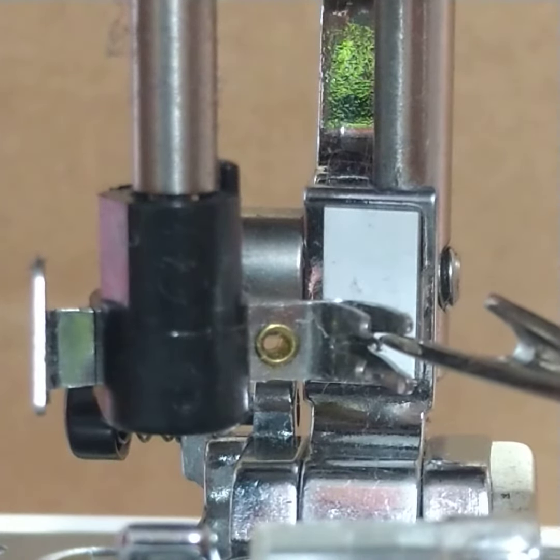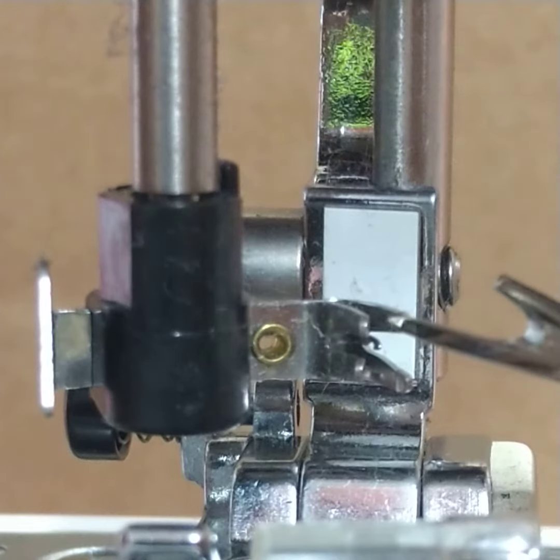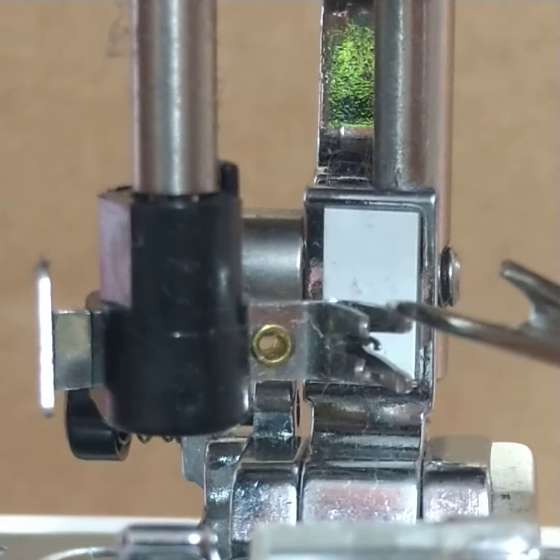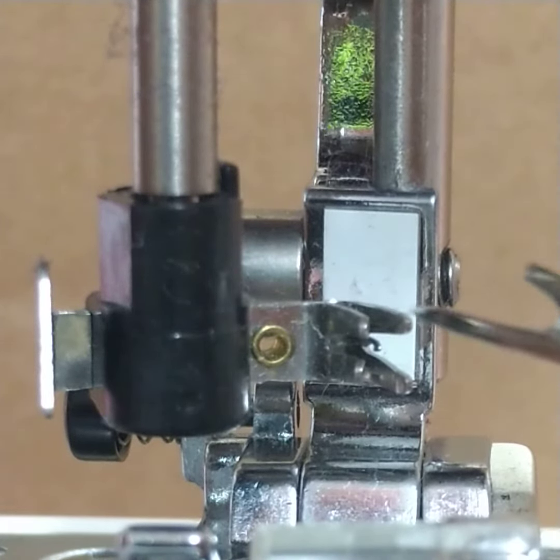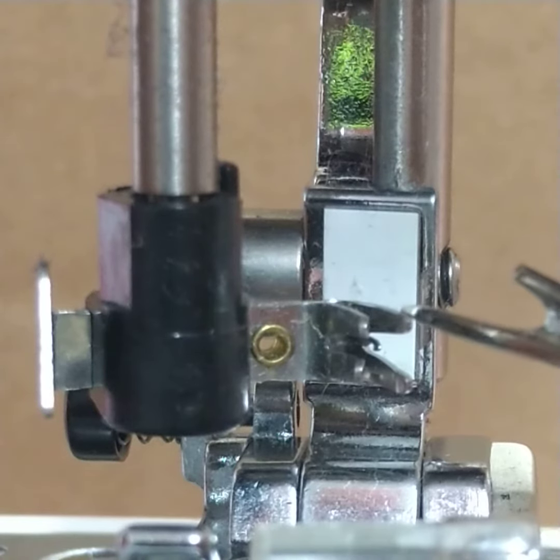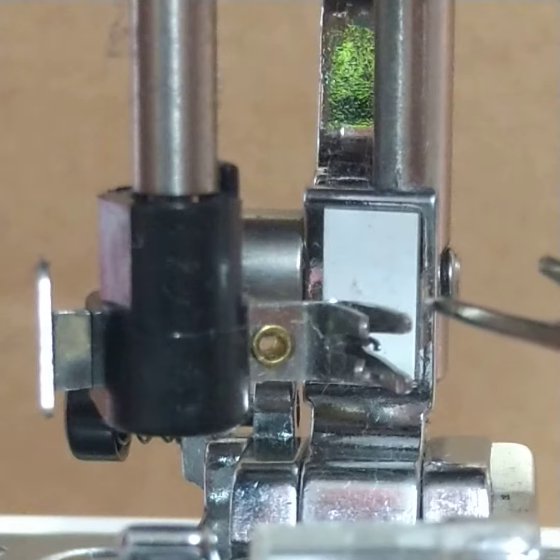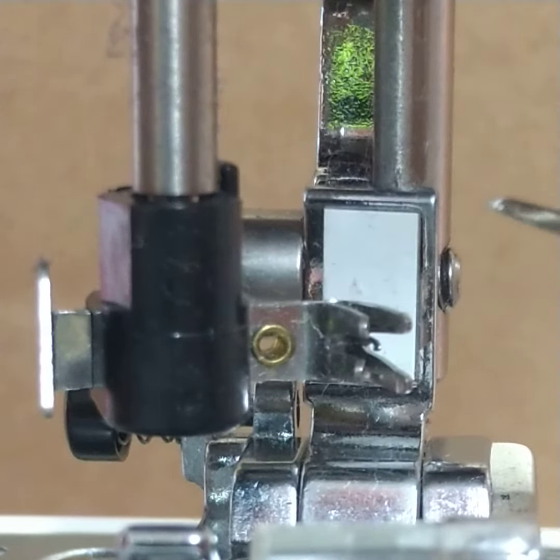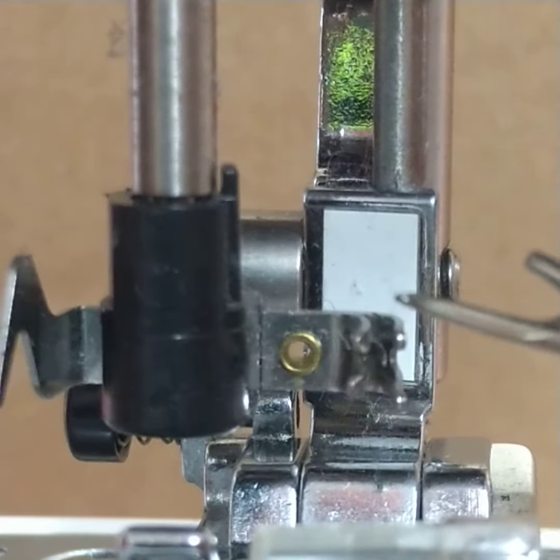Nudge it across a couple, well probably a millimeter, one millimeter, and that will line it up with the eye of the needle, and that will then collect the thread as the threader spins round.